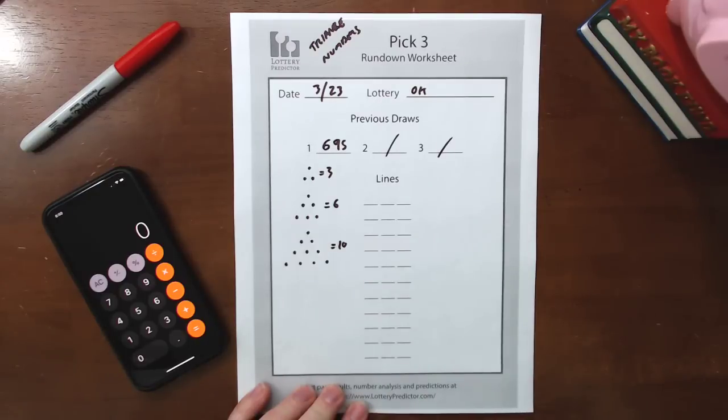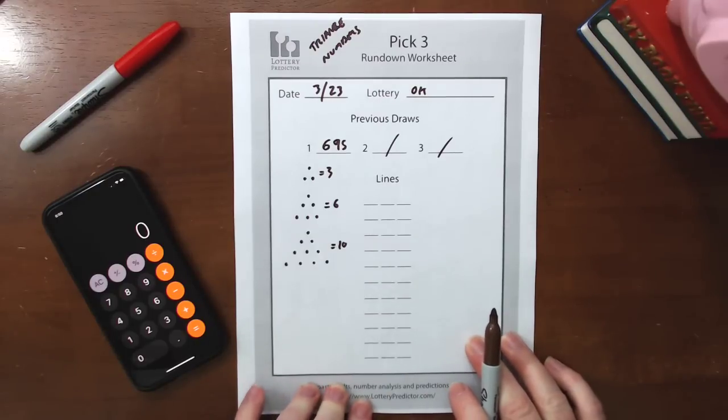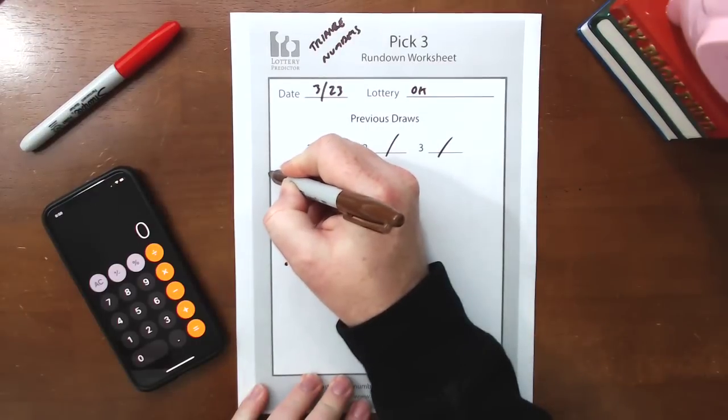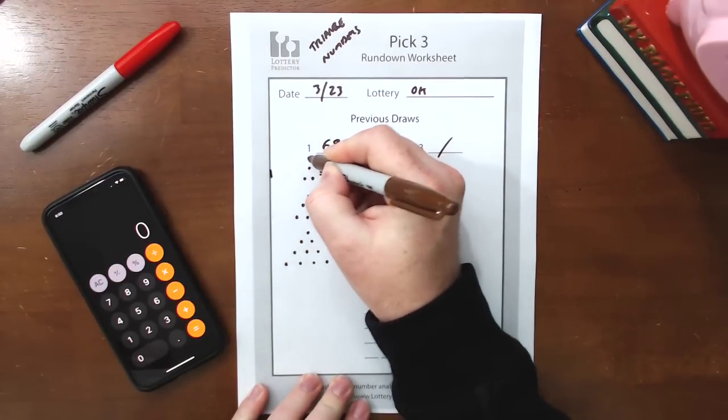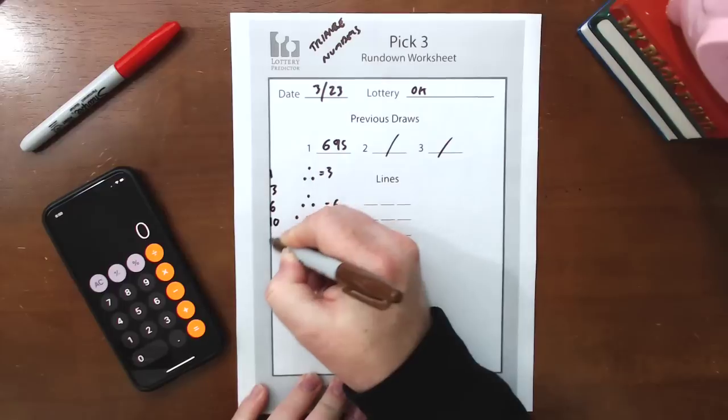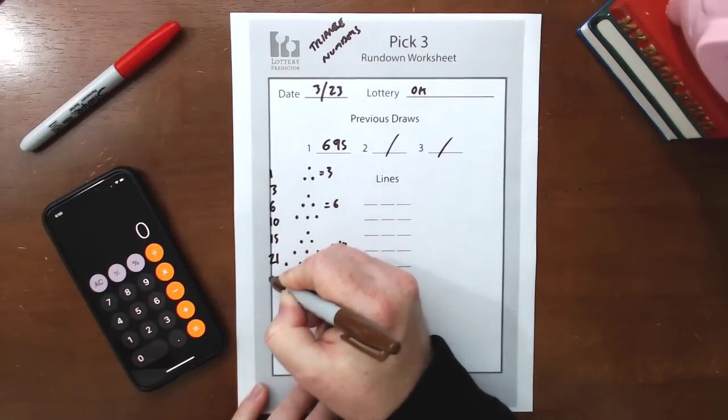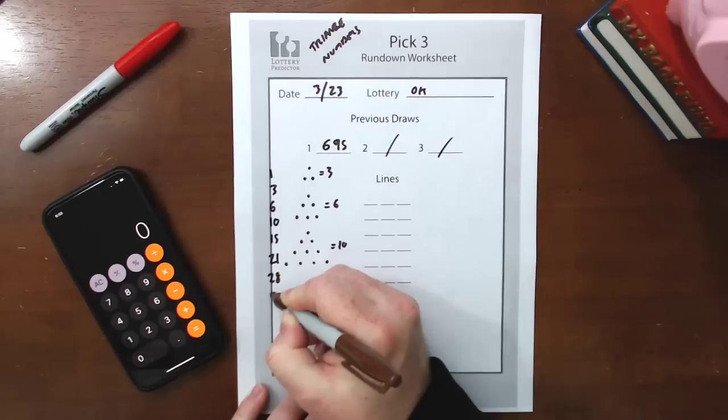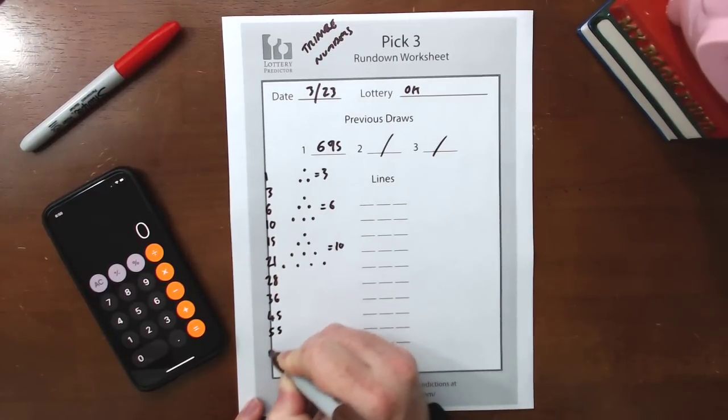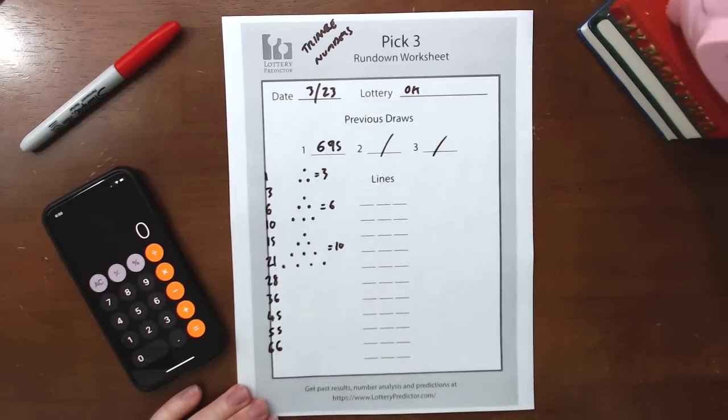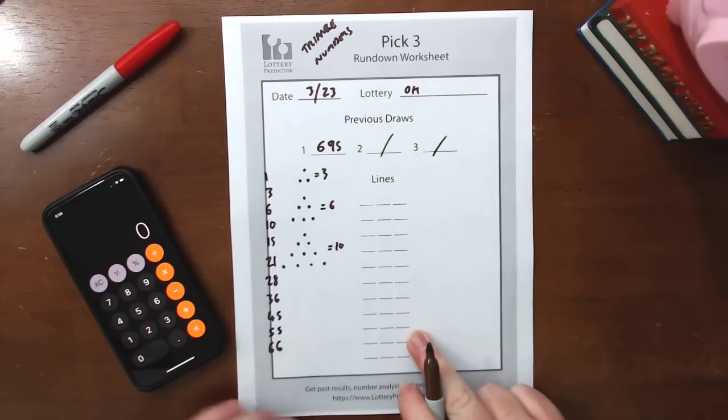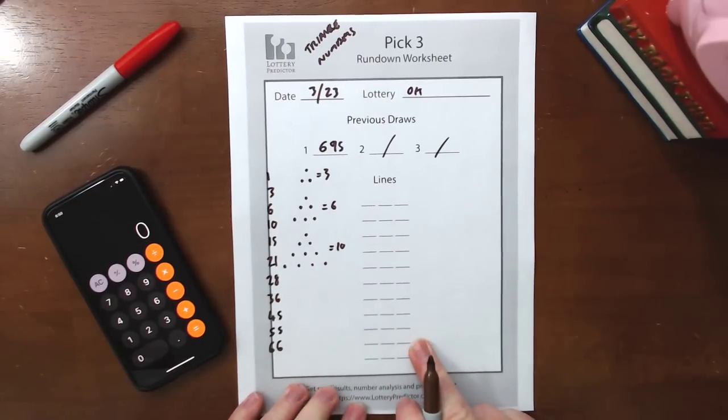It's actually a very well-known mathematical series of numbers used in a lot of different equations. But the actual numbers work out to be 1 is the first one, if you were to use a one-dot triangle, and then 3, 6, 10, 15, 21, 28, 36, 45, 55, and 66. And it keeps going on forever. You can make a triangle as big as you want. But these are the numbers that we're going to use for our rundown.